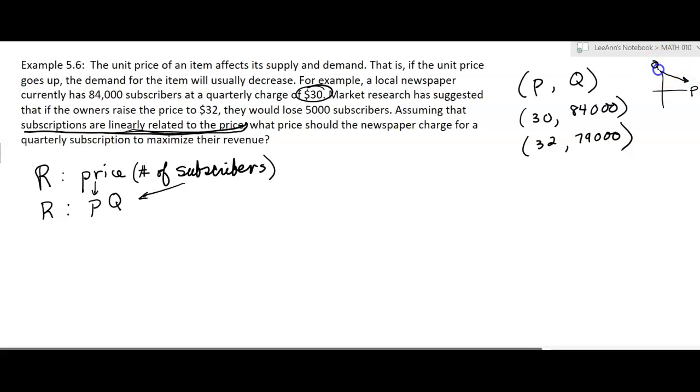All right, I can find the slope of that line. The slope then is going to be 84,000 minus 79,000, which I probably didn't really need to write all that because we already know, and 30 minus 32. Now we knew it was going to be negative, but it's 5,000 over negative 2. So that would be negative 2,500. That would be the slope.